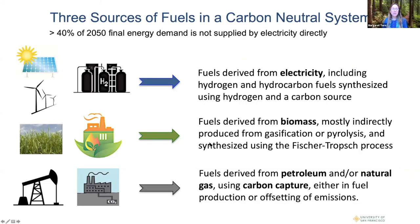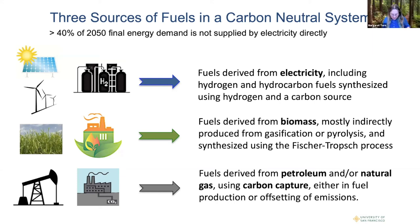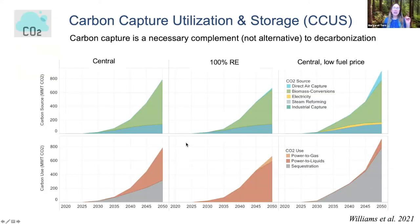Not everything can be powered directly by electricity — we may still use hydrogen or hydrocarbon fuels, but those can be derived from electricity. The key point is that carbon capture is always necessary, even in a 100% renewable energy case. You may not need to sequester carbon from a waste stream, but you still need CO2 for power-to-gas and power-to-liquids conversion in that scenario.